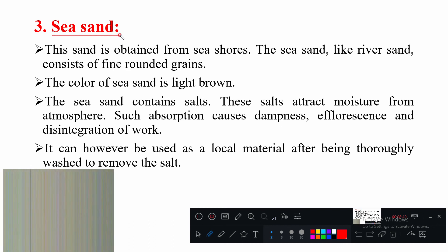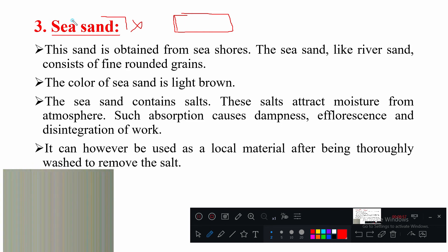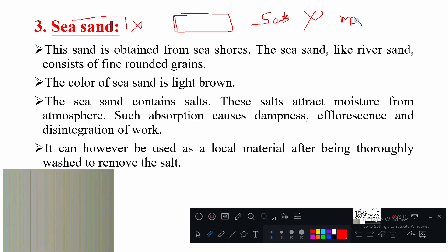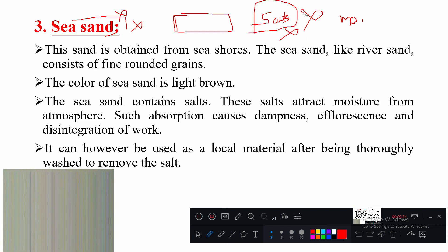Another source is sea sand, but generally for engineering purposes this sand is not used — only for non-engineering purposes such as filling trenches. Sea sand contains salts, which are bad for engineering because they absorb moisture from concrete or mortar, reducing total quality. If you want to use sea sand, you must thoroughly wash it to remove the salt content entirely.